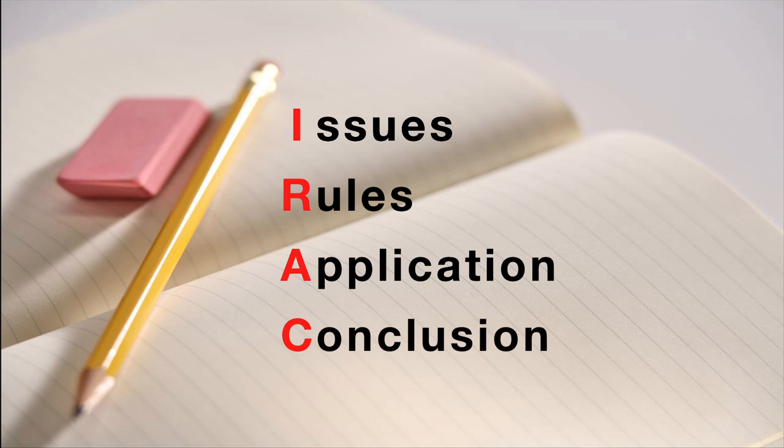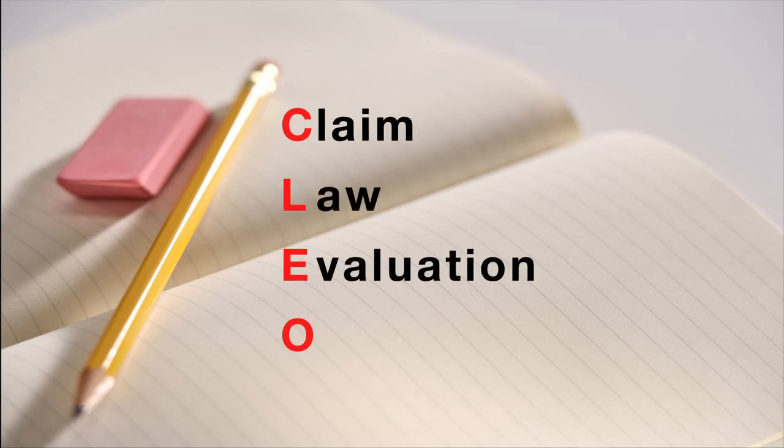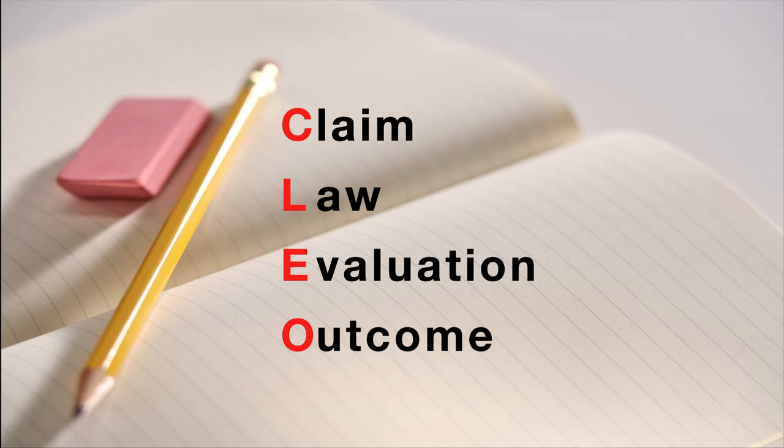What about problem questions? These are generally not common in public law exam papers, but you need to know how to handle them. Generally the question will ask you to advise somebody; there will be a factual situation setting out certain rules. What you need to apply is IRAC — Issue, Rule, Application, and Conclusion. In some American law schools they call it CLEO: Claim, Law, Evaluation, Outcome. The structure of your answer should show that you have flagged the issue, identified the law, applied it, and given an outcome based on the facts.